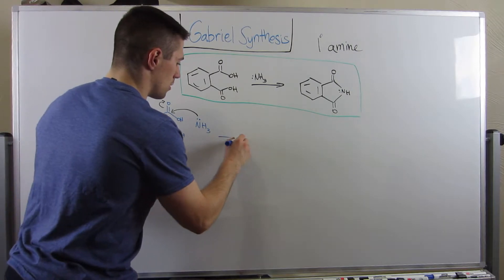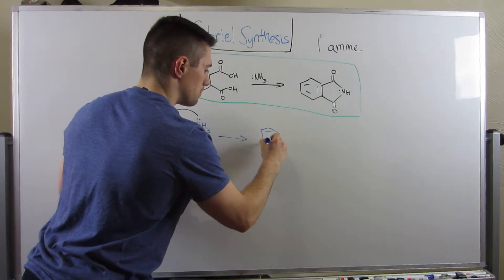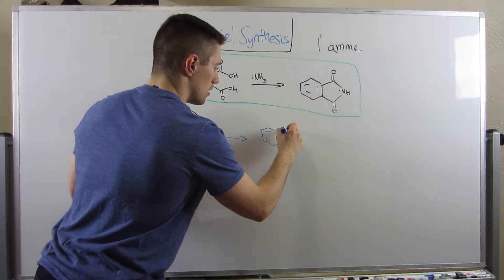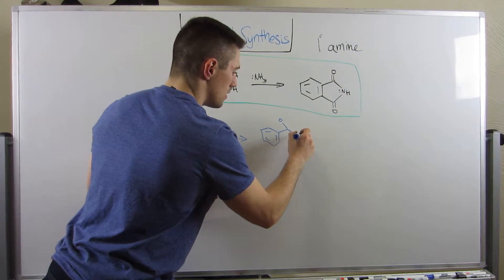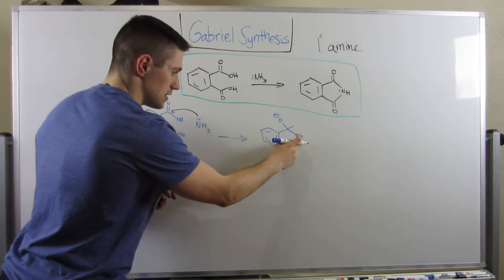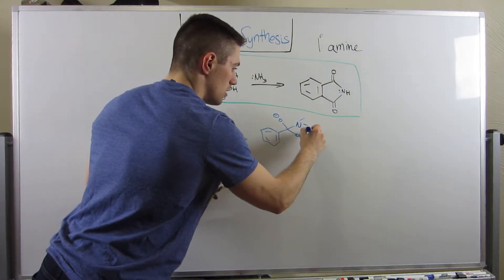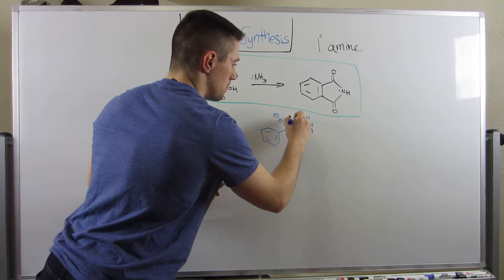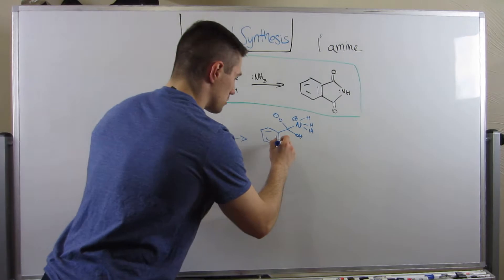Electrons will bounce up onto the carbonyl oxygen. Draw my arrow. Draw my ring. Now remember, this is the tetrahedral intermediate type step that we've seen before. Oxygen has a negative charge. I didn't touch that OH. I now have this nitrogen here with these three hydrogens. Nitrogen has a positive charge. Let me finish the rest of the molecule.